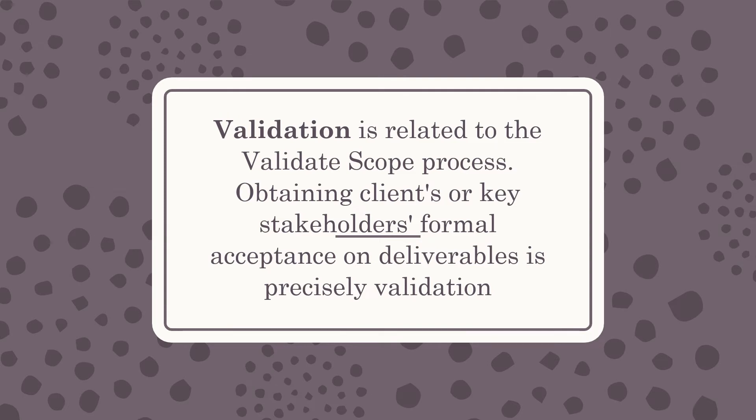Obtaining clients' or key stakeholders' formal acceptance on deliverables is precisely validation. We discussed this in the Validate Scope process video as well. When you are trying to obtain the client's approval on your deliverable, you are basically performing the Validate Scope process. Once the client or key stakeholders approve a deliverable, you have done validation.